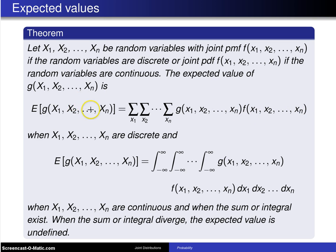So as usual, this function g just simply shows up before the joint probability mass function in the summation. And in the continuous case,